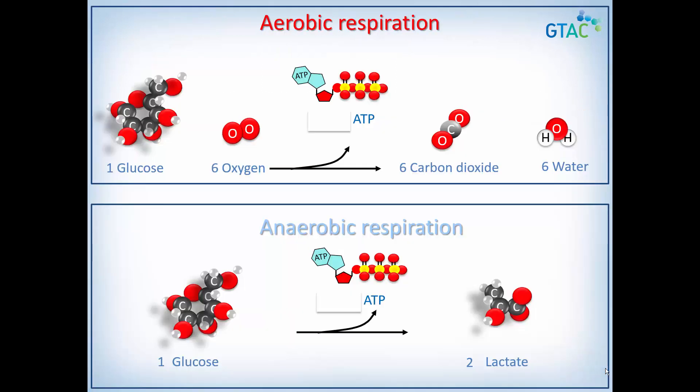Let's return to the original equation for respiration and compare aerobic versus anaerobic respiration. In aerobic respiration, we get 36 to 38 ATP — it's not a precise number. In anaerobic respiration, we get 2 ATP. That's a big difference. You can start to see why we need to keep breathing — we need to keep getting oxygen so we can do aerobic cellular respiration and keep our cell factories running.